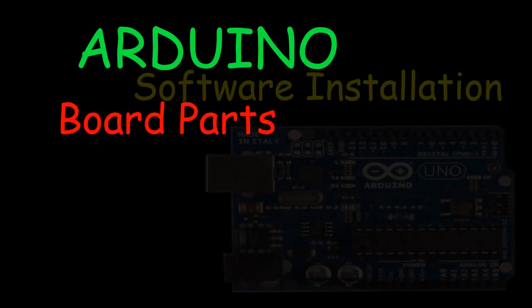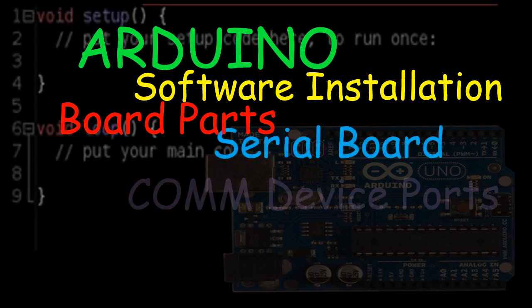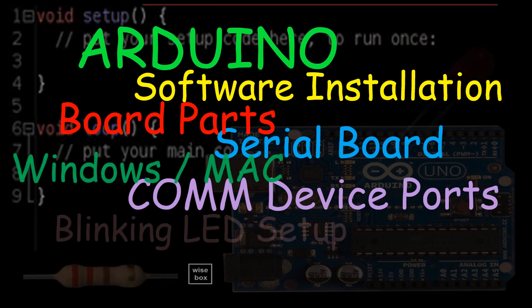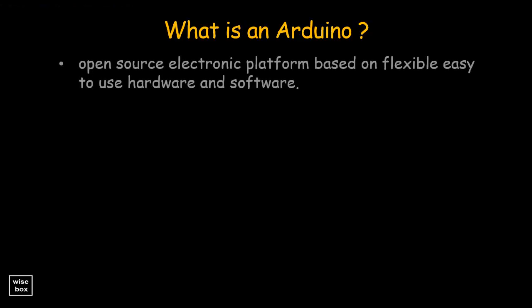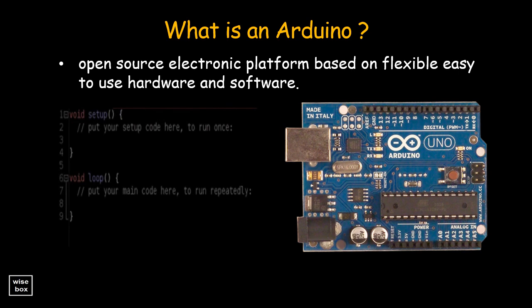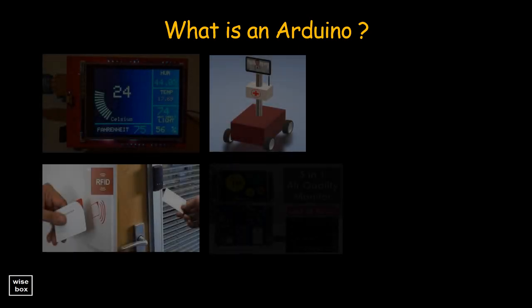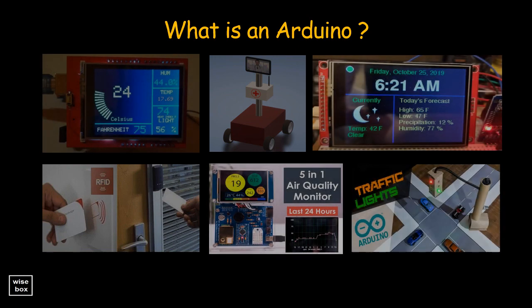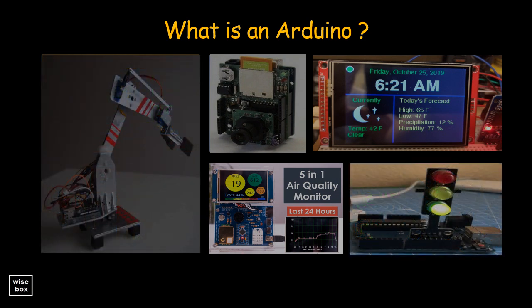Introduction to Arduino hardware and software, the parts of the Arduino development board, the installation of Arduino IDE software, and the blinking LED setup tutorial. The Arduino is an open-source electronic platform based on flexible, easy-to-use hardware and software. For many years, the Arduino platform has been used on thousands of projects, from simple everyday tools to highly complex scientific instruments and engineering devices. It is supported worldwide by students, programmers, artists, hobbyists, and professionals.